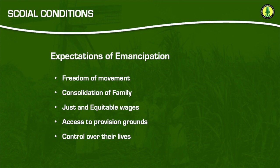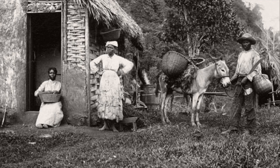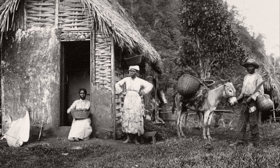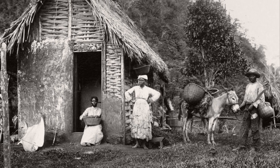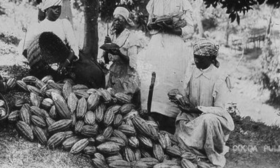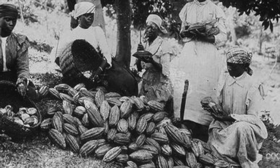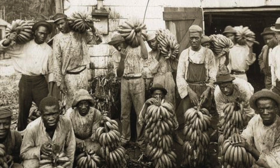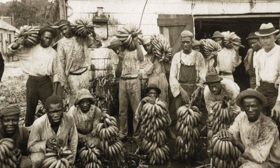For many, control meant continuing to farm their provision grounds while working on the plantations for wages when necessary to supplement their incomes. However, poor treatment by the planters pushed many of the formerly enslaved to seek their own plots of land. This led to the development of a peasantry in a number of Caribbean territories by the beginning of the 20th century. By 1902 in Jamaica, for instance, there were over 24,000 peasants owning lands between 5 and 50 acres in size, and peasant farmers accounted for the majority of coffee exported. Peasants also introduced crops that later became major export staples, such as bananas.